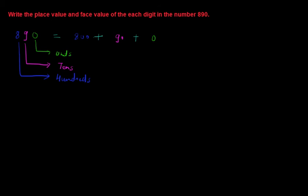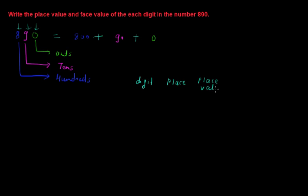Now when writing the place value and face value of each digit — 8, 9, and 0 — I suggest making it in a tabular form. The columns will be: digit, place of the digit, place value, and face value.